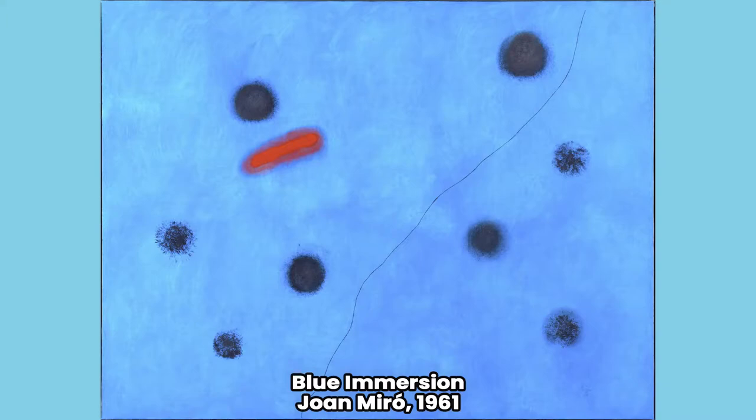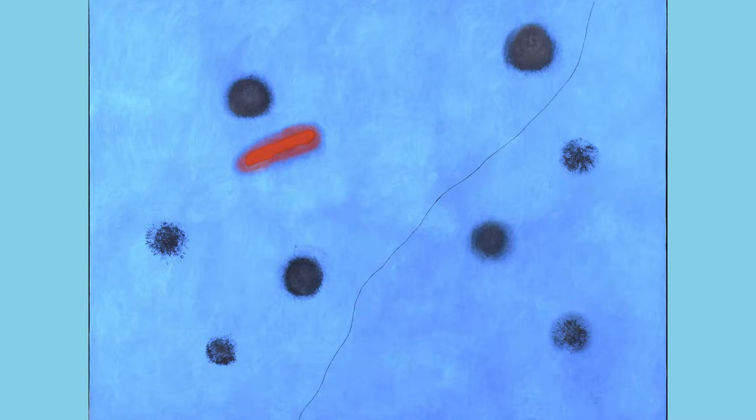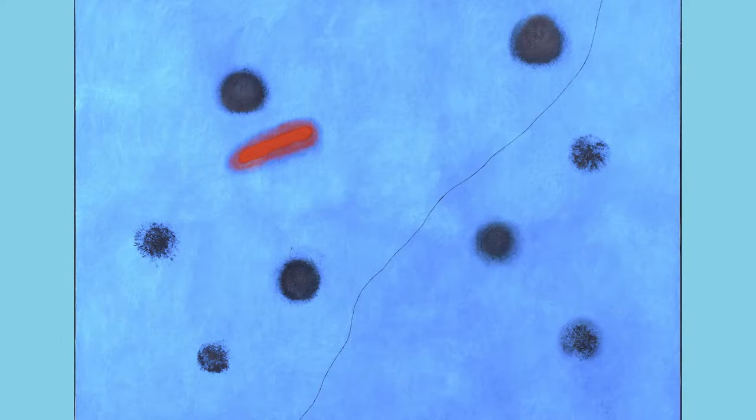Blue Immersion — artwork by Joan Miró from the year 1961. Starting in 1923, Joan Miró's work took on a different nuance, that of poetic freedom, which is expressed through the apparently chaotic arrangement of the elements in his compositions.